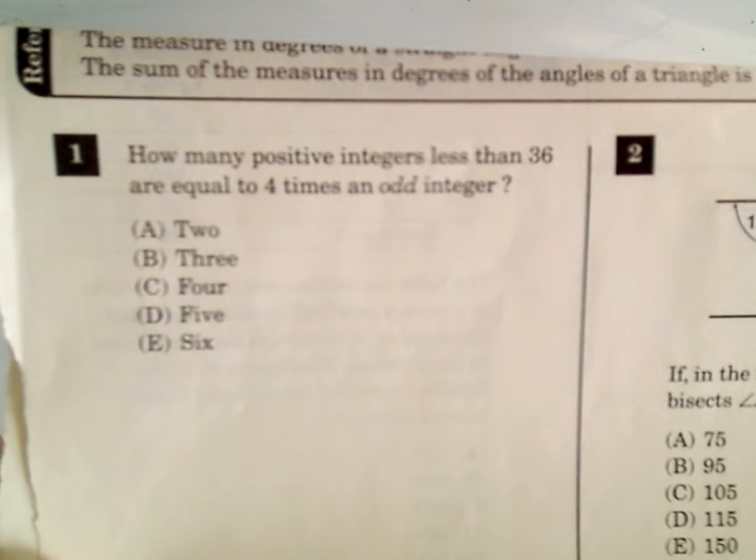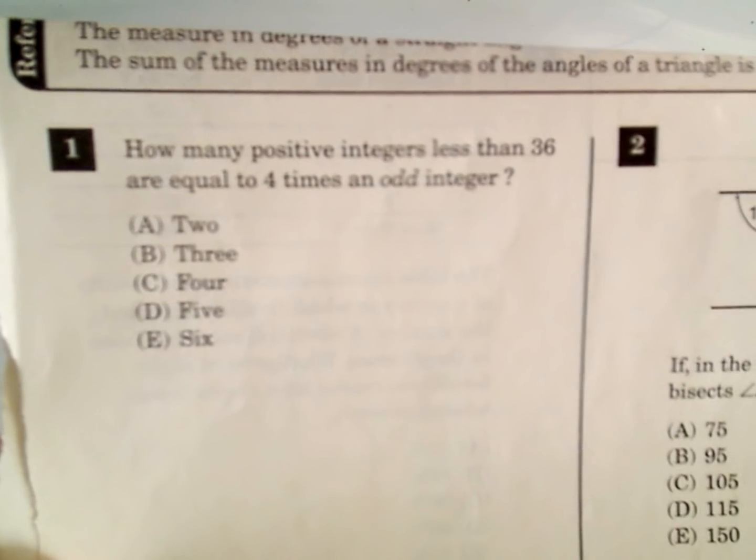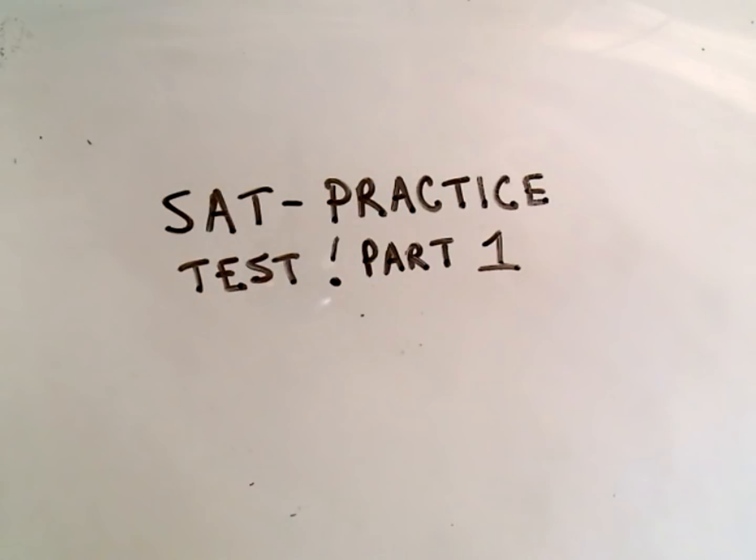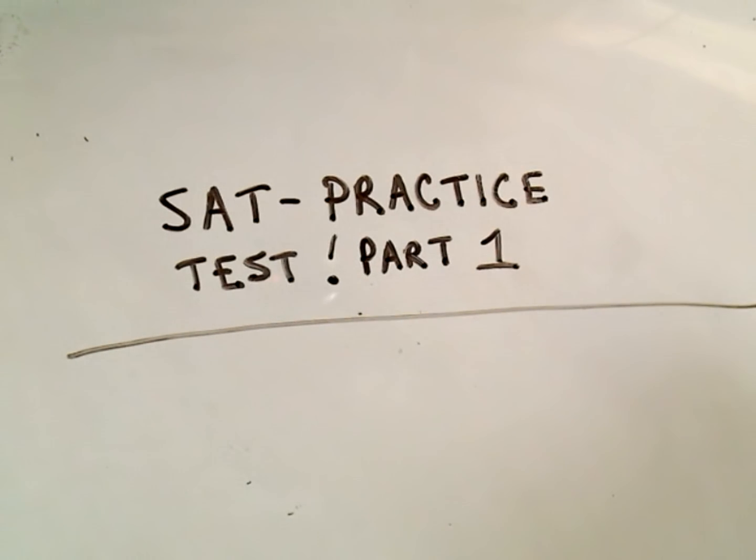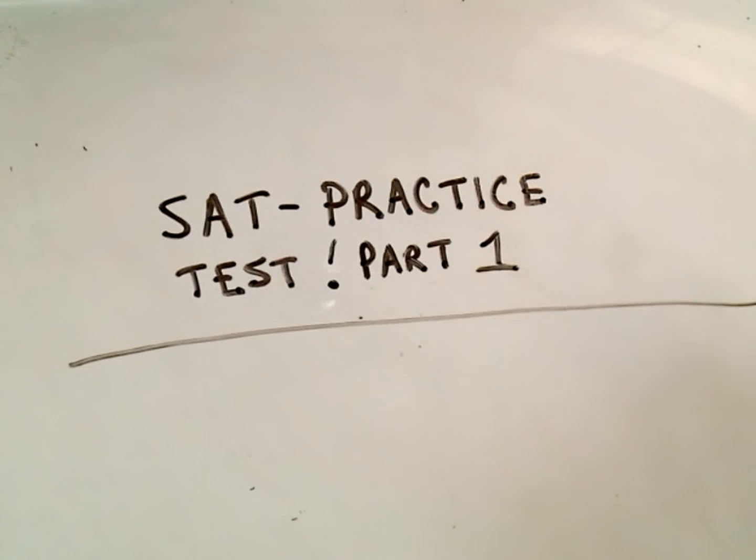How many positive integers less than 36 are equal to 4 times an odd integer? Well, I think the easiest way, probably, to do this problem is to just check. Okay, so how many positive integers less than 36 are equal to 4 times an odd integer?